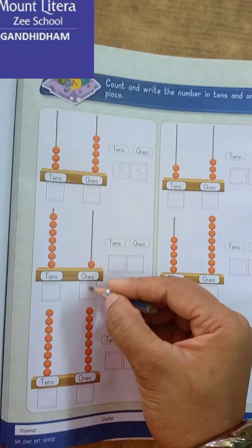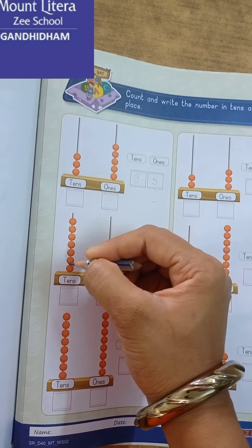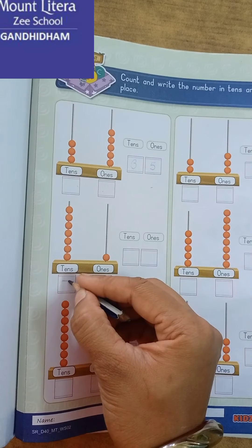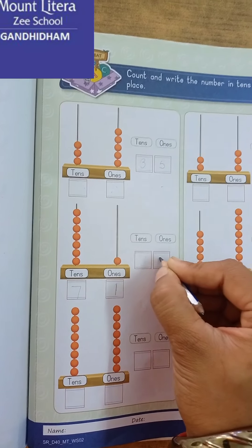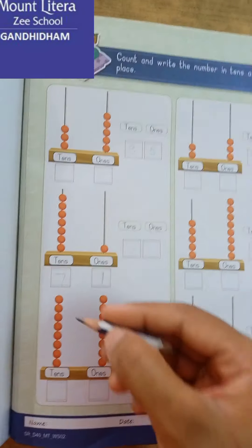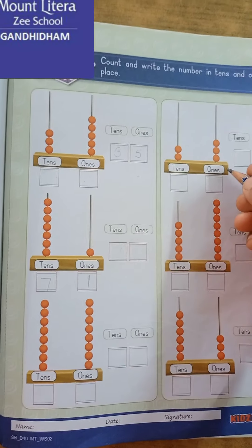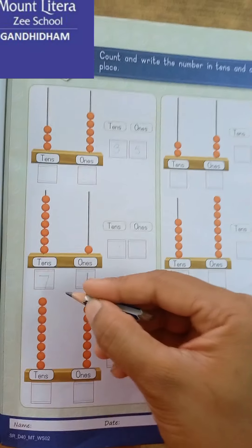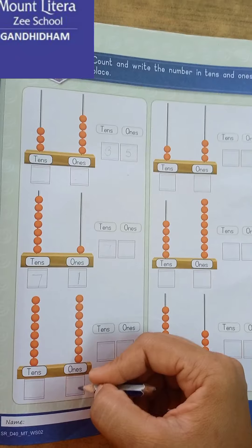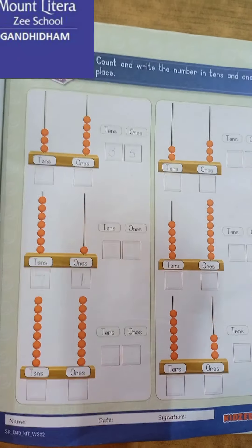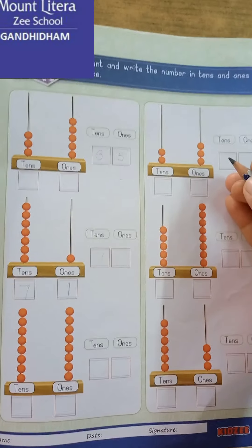Here ones — one. Toh ones ke place pe one likhhenge. And one, two, three, four, five, six, seven. So we have to write here seven on tens place. Aur yahaan seven one — seventy one. Aur baqi ke joh objects diye huye hai usko count karenge, aur joh number hume milega woh likhhenge box mein — ones ke place pe aur tens ke place pe.